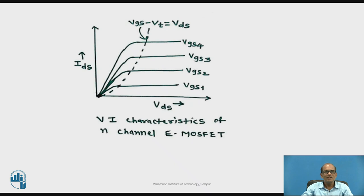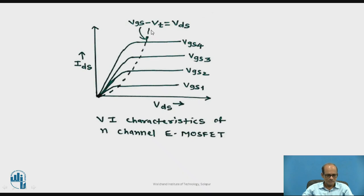These are the phi characteristics of N-channel E-MOSFET — drain current versus VDS for different values of VGS: VGS1, VGS2, VGS3, and VGS4. A dotted line is drawn, which represents the set of points satisfying the condition VDS equals VGS minus VT.